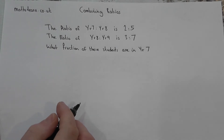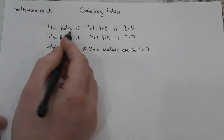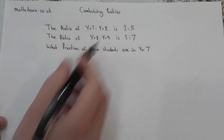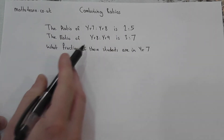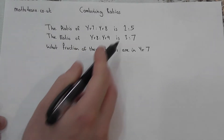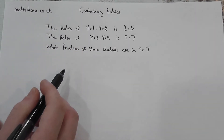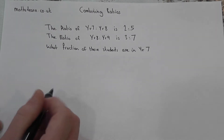This video reviews combining two ratios. We're told the ratio of Year 7 to Year 8 is 2 to 5, and the ratio of Year 8 to Year 9 is 3 to 7. The question is: what fraction of these students are in Year 7?